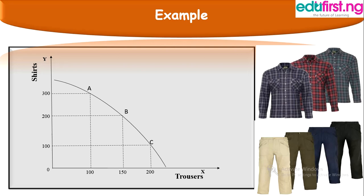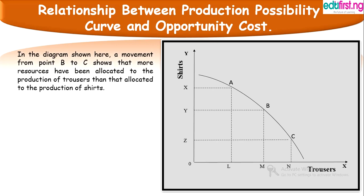Now we look at the relationship between production possibility curve and opportunity cost. We have already established that given the limited resources of every organization, large quantities of different commodities cannot be produced at the same time. As more resources are allocated to producing a particular commodity, the other commodity that will be produced will reduce, because much of the resources have been channeled to the first commodity under consideration.